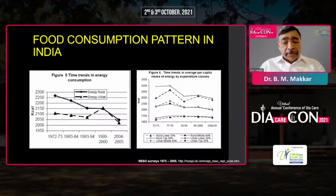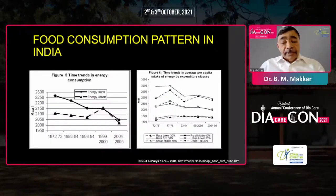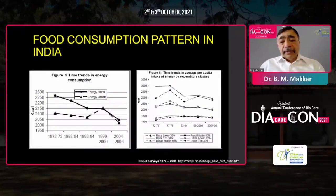This is very interesting data showing the trajectory of energy consumption over 40 years between the 1970s and 2000. There has been a decrease in total energy consumption in the rural population, while it has been stable in the urban population. Though energy consumption increased in the lowest socioeconomic group in both rural and urban populations, overall there has been a stable or decreased energy consumption.